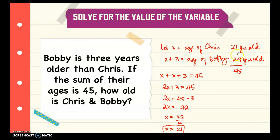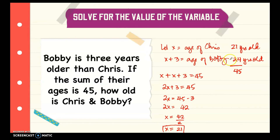When solving mathematical problems using the strategy of making equations, the steps are: first, represent the unknown with a variable — here we let x for Chris's age and x plus 3 for Bobby's age. Second, set up the equation based on the condition of the problem — the sum of their ages is 45, so x plus (x plus 3) equals 45. Third, solve for the value of the variable — we get x equals 21. Then determine the answer: Chris is 21 and Bobby is 24.